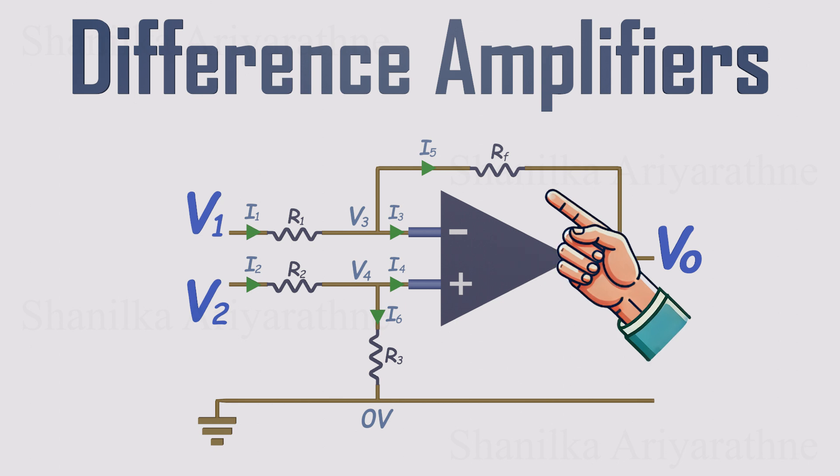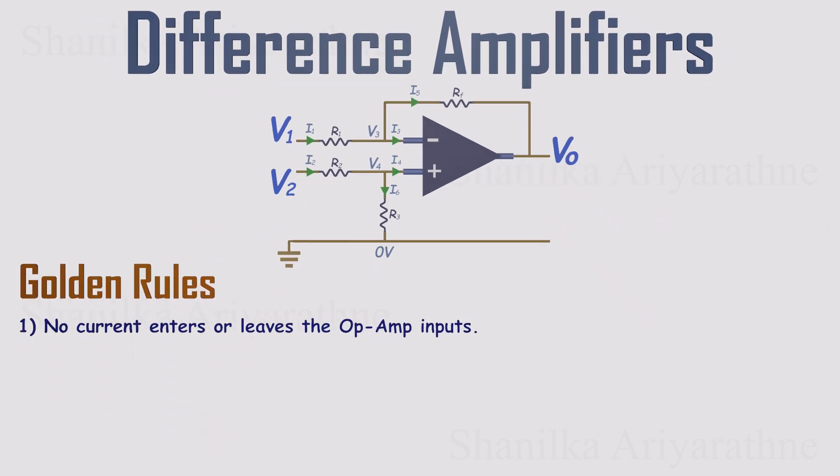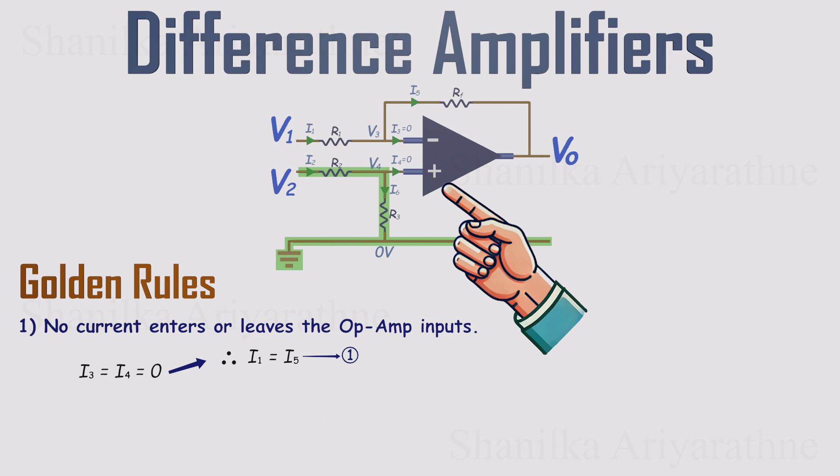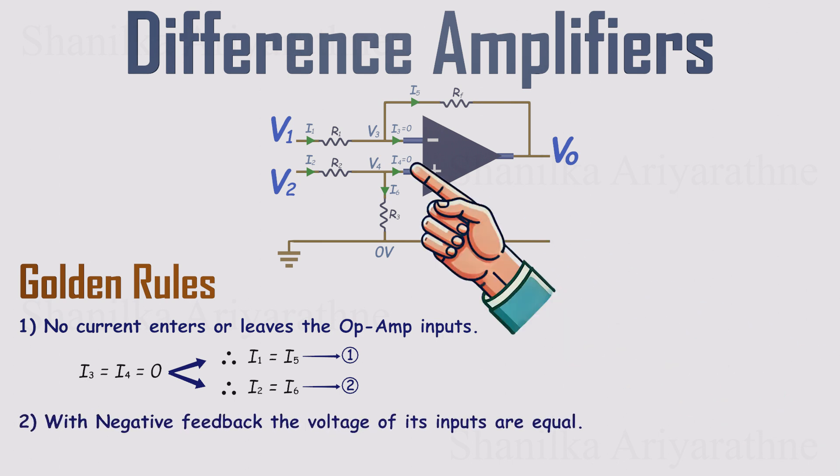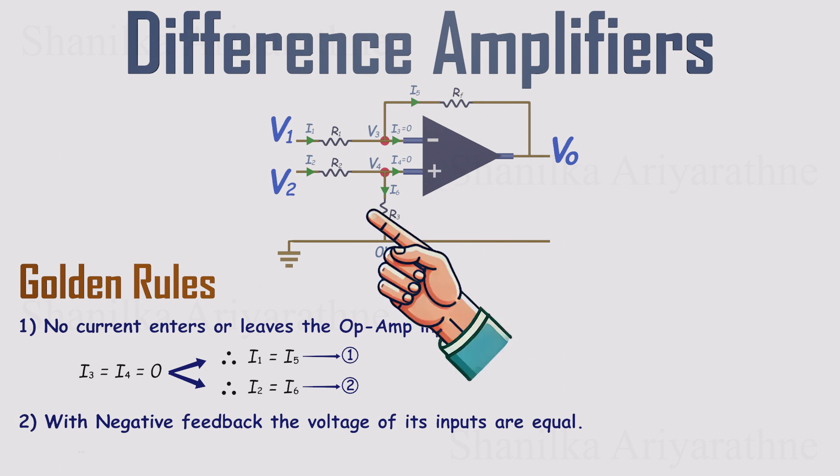Because this circuit uses negative feedback, the golden rules apply. Rule 1. No current flows into the op-amp inputs. That means I3 and I4 are both zero. So the current coming through resistor R1 has nowhere else to go. It must flow through the feedback path RF. That gives us our first equation. I1 equals I5. On the non-inverting side, the current through resistor R3 also has nowhere else to go except down through the resistor to ground. So I2 equals I6. That's our second equation. Rule 2. With negative feedback, the op-amp drives its output so the inverting and non-inverting inputs sit at the same voltage. In other words, V3 equals V4. That's our third equation. With those three rules in place, we can now use Ohm's law to turn currents into voltages and see exactly how the output responds to the inputs.